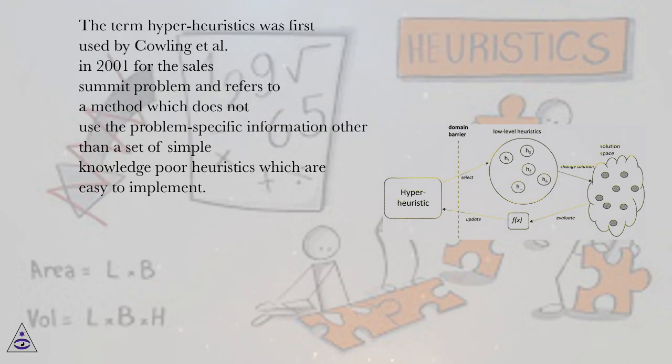The term hyper-heuristics was first used by Cowling et al. in 2001 for the Sales Summit problem and refers to a method which does not use problem-specific information other than a set of simple knowledge-poor heuristics which are easy to implement.